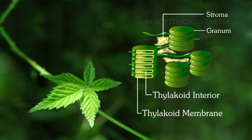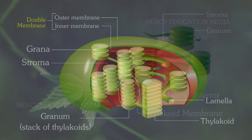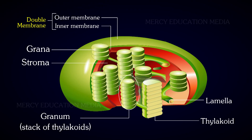This structure is known as granum. Generally, a chloroplast contains 40-60 grana. The photosynthetic pigments are found in grana. The stroma contains circular DNA, RNA and enzymes for starch synthesis.